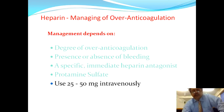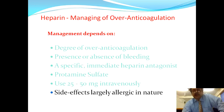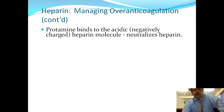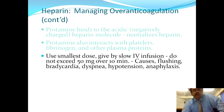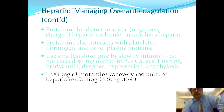The dose of protamine sulfate is 25 to 50 mg intravenously; side effects are largely allergic in nature. Protamine binds to the acidic, negatively charged heparin molecules and neutralizes heparin. It also interacts with platelets, fibrinogen, and other plasma proteins to combat heparin. Use the smallest dose possible, given IV slowly not exceeding 50 mg over 10 minutes. It can cause flushing, bradycardia, dyspnea, hypotension, and anaphylaxis. Use 1 mg of protamine sulfate for every 100 units of heparin remaining in the patient. Protamine sulfate is a low molecular weight basic, positively charged protein.